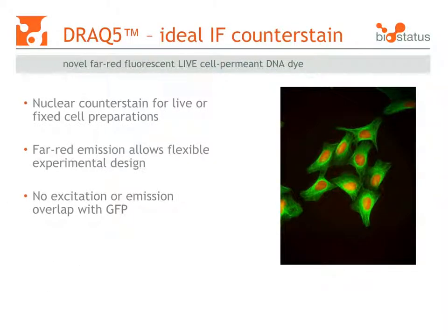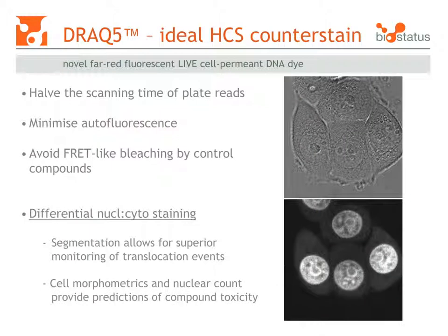In cell based imaging, DRAC5 can be excited by red excitation light. It is an ideal nuclear counterstain in both live and fixed end point assays. Its far red fluorescence halves the screening time for GFP reporter assays. A weak differential cytoplasmic staining allows nucleus-cytoplasm segmentation that permits morphometric analysis, indicating cellular toxicity.